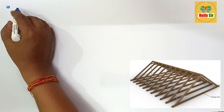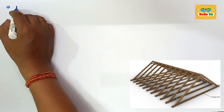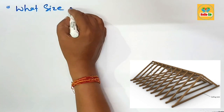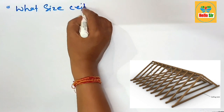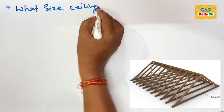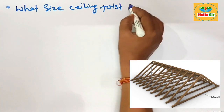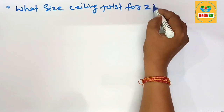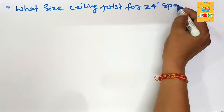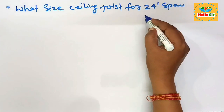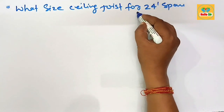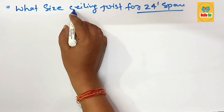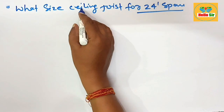In this video, we'll discuss what size ceiling joist you need for a 24-foot span. The span length is 24 foot and you have to determine the size of ceiling joist required.